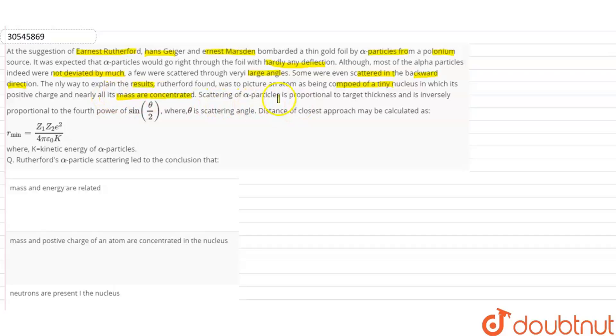Scattering of alpha particles is proportional to the target thickness and is inversely proportional to the fourth power of sin theta by 2, where theta is the scattering angle. Distance of closest approach may be calculated as R minimum, which is equal to Z1 Z2 E squared upon 4 pi epsilon naught K, where K is the kinetic energy of the alpha particles.